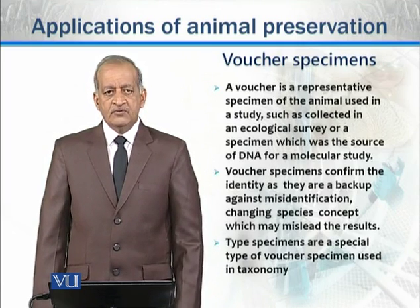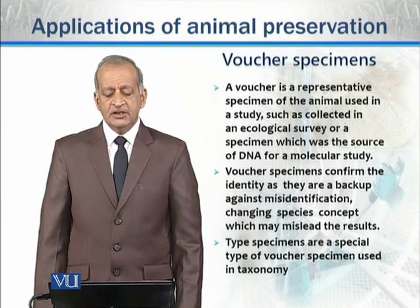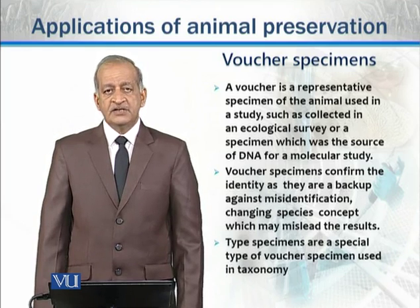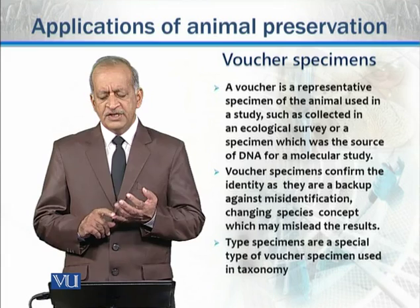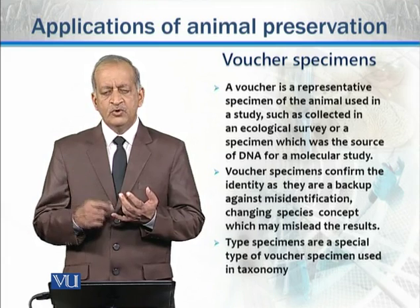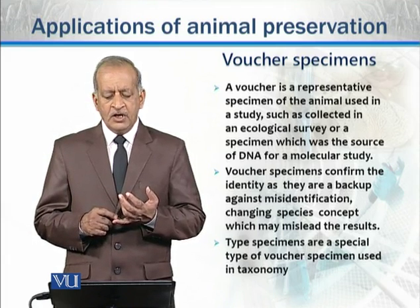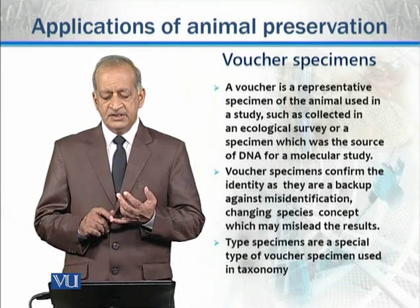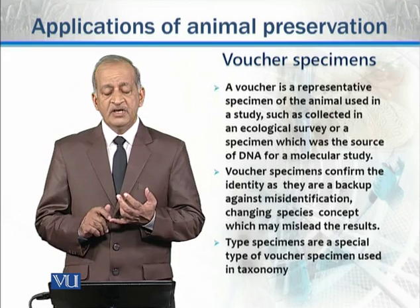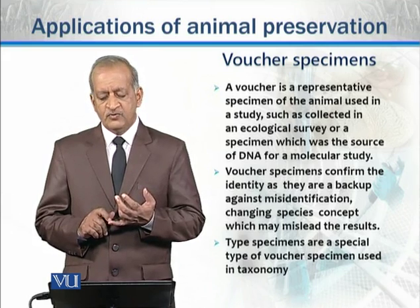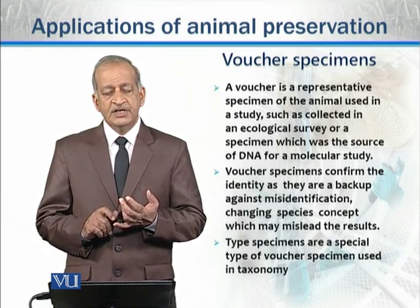Next, voucher specimens. A voucher specimen is a representative specimen of the animal used in a study, such as collected in an ecological survey, or in a molecular study where DNA can be used to identify a species and then act as a voucher specimen. Voucher specimens confirm identity and serve as back-up against mis-identification or changing species concepts which may mislead results. Type specimens are a special type of voucher specimen used in taxonomy.